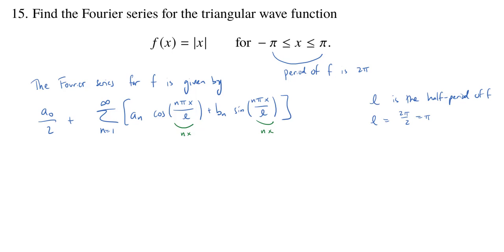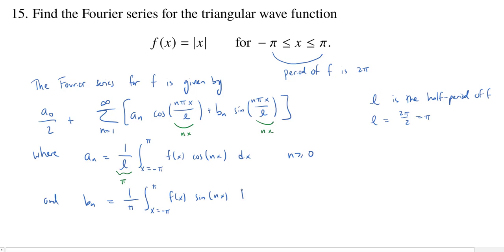Of course, we haven't defined yet the a's and the b's. So a sub n is equal to 1 over l, and our l is going to be pi, times the integral from negative pi to pi of our function f of x times the cosine of nx dx. And so this is for all n at least 0. And then b sub n is 1 over pi times the integral from negative pi to pi of f of x times the sine of nx. Only now n is going to start at 1.